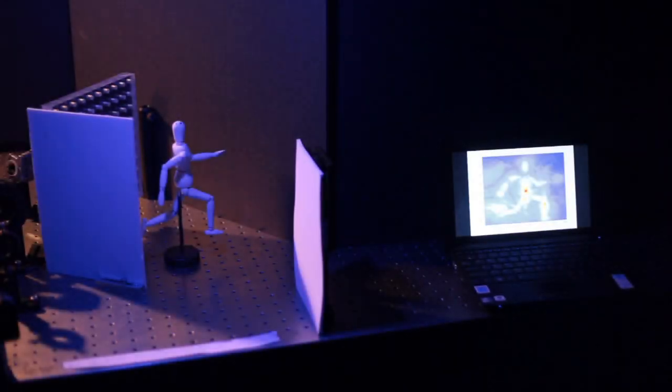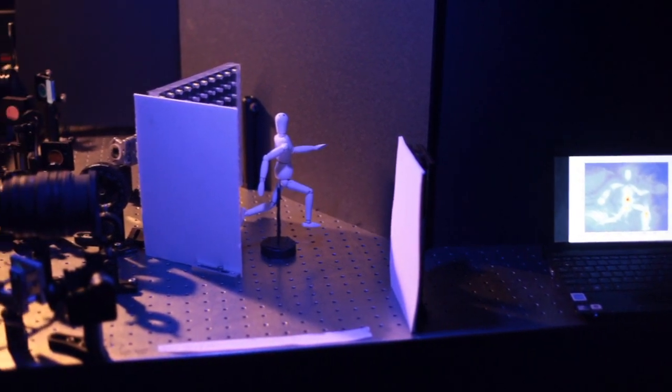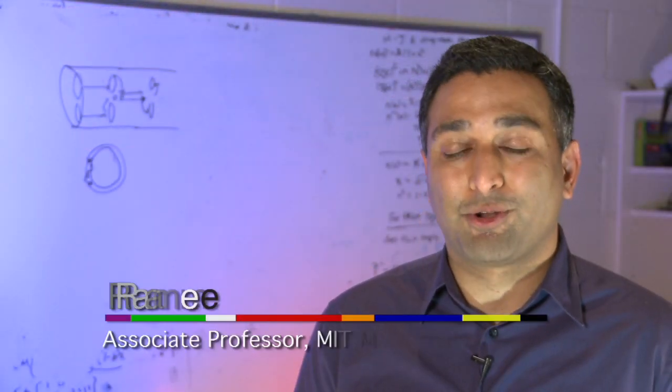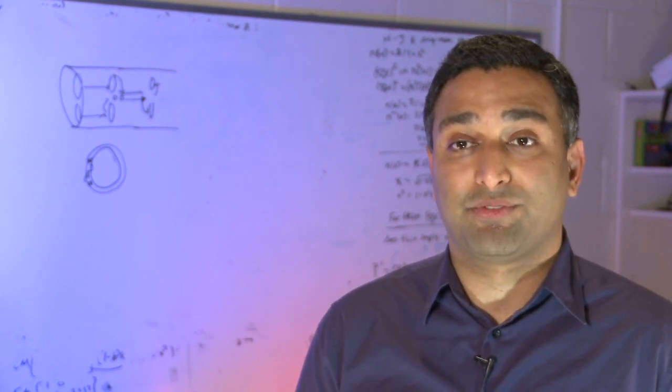This way we can reconstruct images of objects that the camera never looked at. We have created a new form of photography, femto photography, that allows us to look around corners and beyond the line of sight.